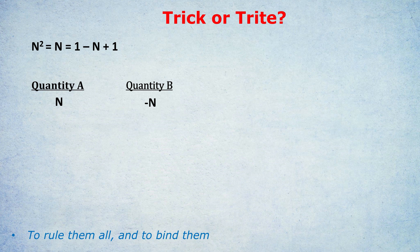Question one, trick or trite? Coming up to Halloween, right? It's a pun, trick or treat. Anyway, I'm getting beside myself. Okay, we've got n² = n = 1 - n + 1.